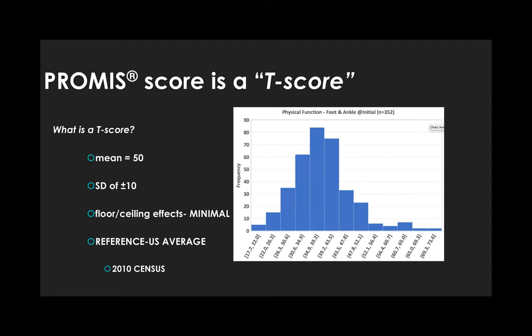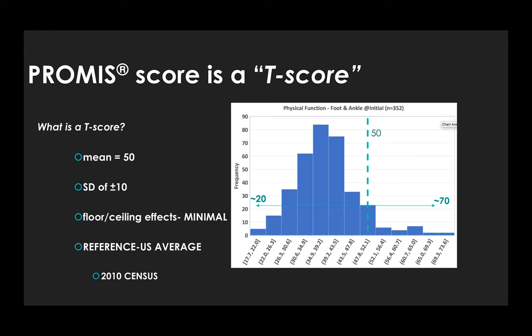Here's an example of data at initial evaluation for physical therapy. All diagnoses are associated with foot and ankle problems. The x-axis are bins of T-scores and the y-axis is frequency. The average physical function is low, about one standard deviation worse than the US average. Also note that the low scores are three standard deviations worse than the US average. And the highest scores or best scores are two standard deviations above average. That means the full range of the physical function scale is from about 20 to 70.